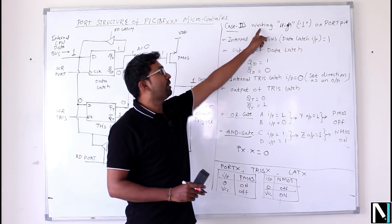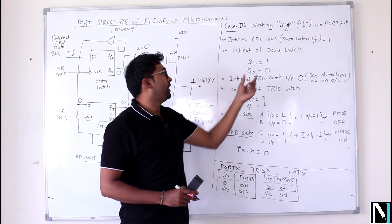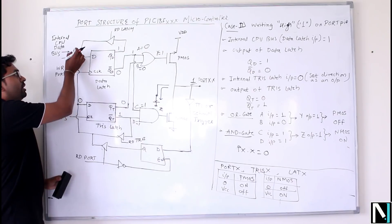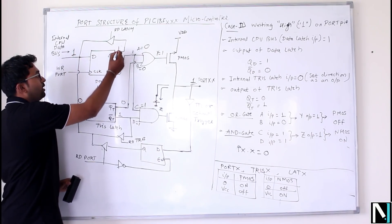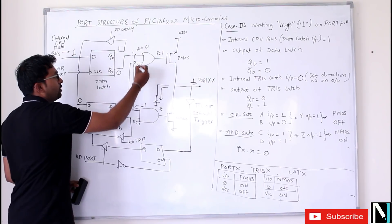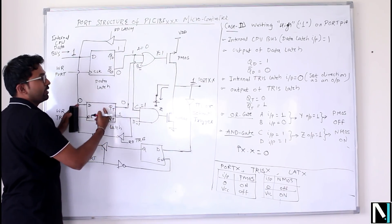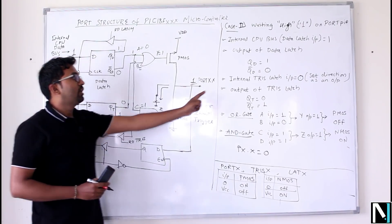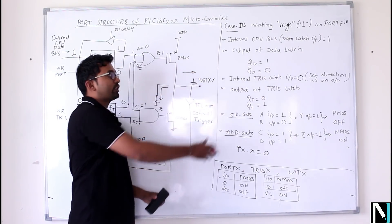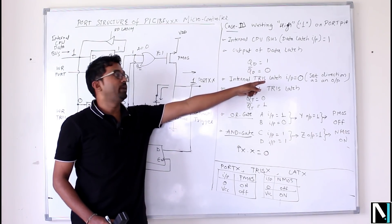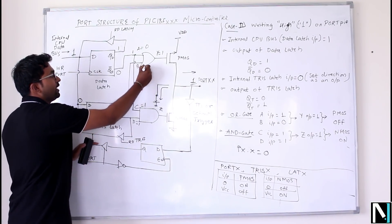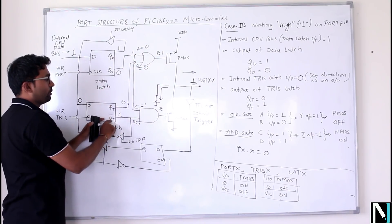Case 2: writing HIGH on the port pin. We want a 1 at the output, so the internal CPU bus writes 1. This gives QD = 1 and QD-bar = 0, so input A to the OR gate is 0. For the TRIS latch, since we are still writing data out, TRIS input = 0, giving QT = 0 and QT-bar = 1.